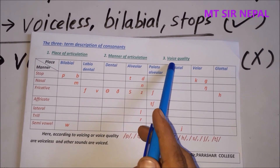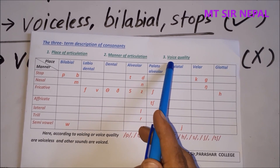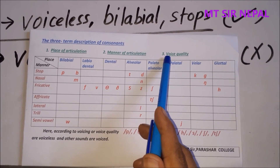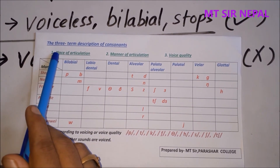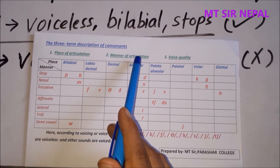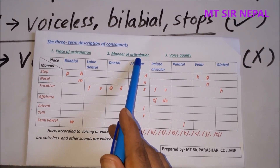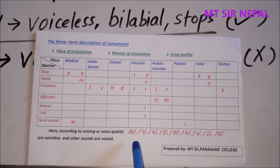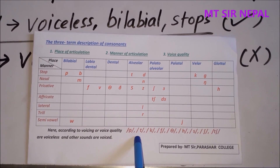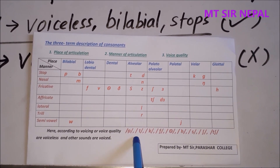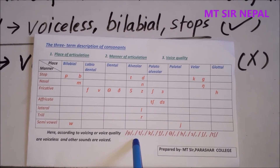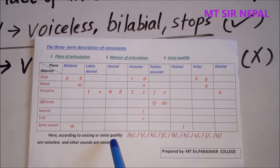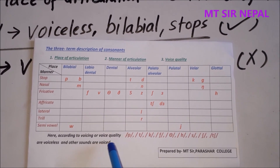Here we have written voice quality in third number, but the correct order is: first is voice quality, second is place of articulation, and third is manner of articulation. So remember: first voice quality — voiced or voiceless — then place of articulation, then manner of articulation.